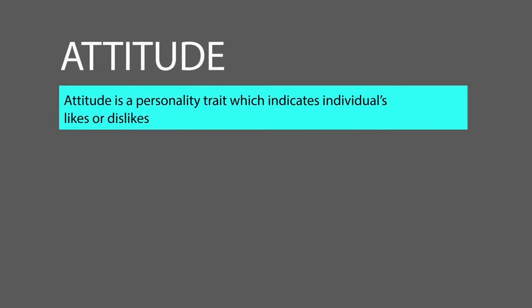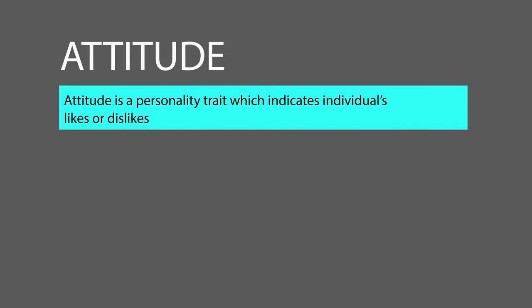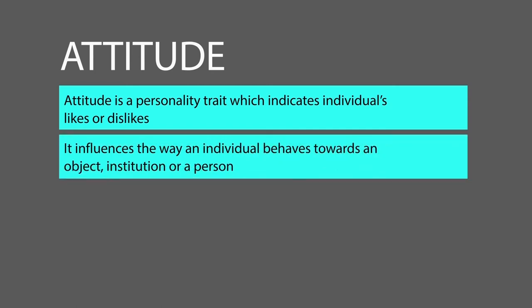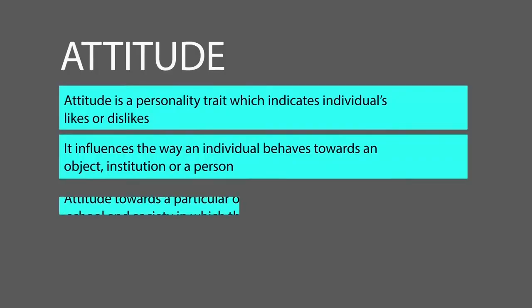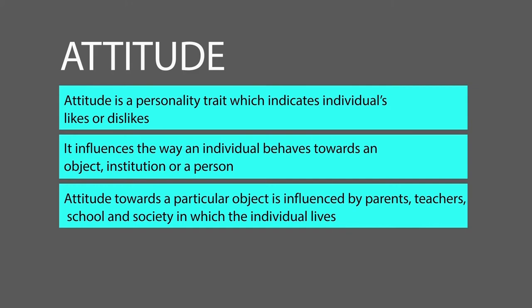Attitude is basically a personality trait which indicates an individual's likes or dislikes. It influences the way an individual behaves towards an object, institution or a person. If something is happening in the class, in the society, in the school or in your family, one member may like that but another may not. This difference is due to the difference in their attitude. Attitude towards a particular object is influenced by your upbringing, parental influence, teacher's influence, school and the society where an individual is living.